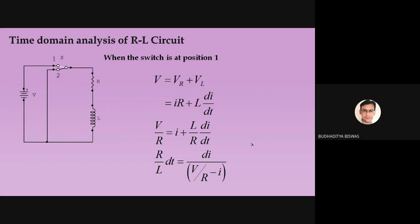We will see how the current is actually varying through the inductor, or how the voltage is varying across the capacitor — we will find out the expression. That's why it is called time domain analysis, because the current does not grow to its final value instantly. It takes some time, and within this time, we will find out what is happening.